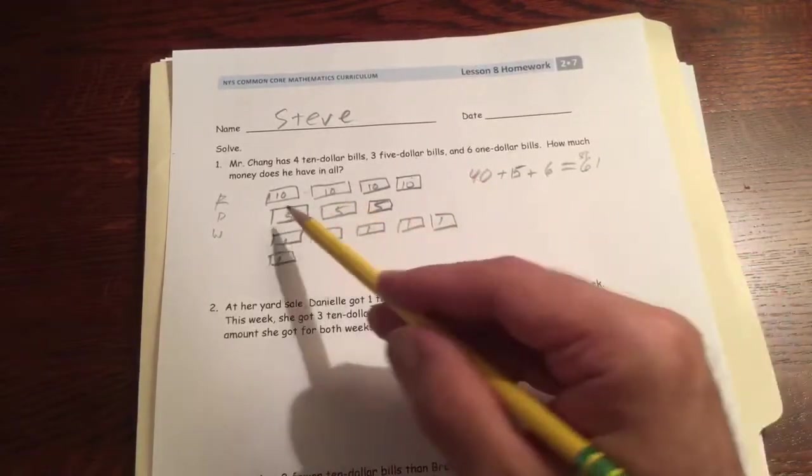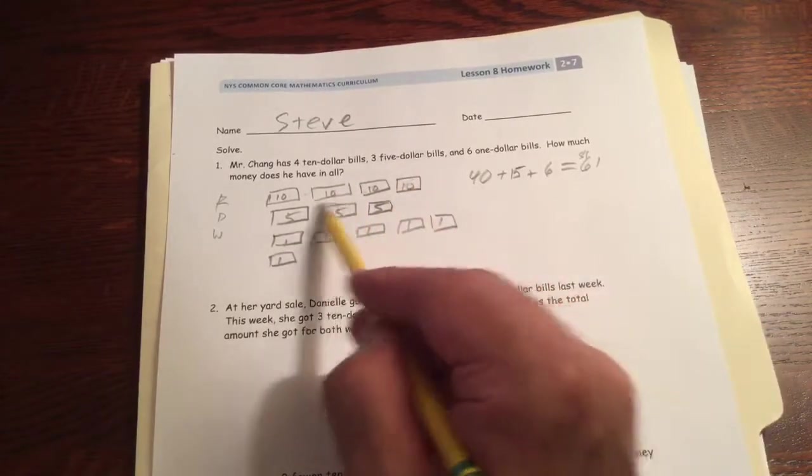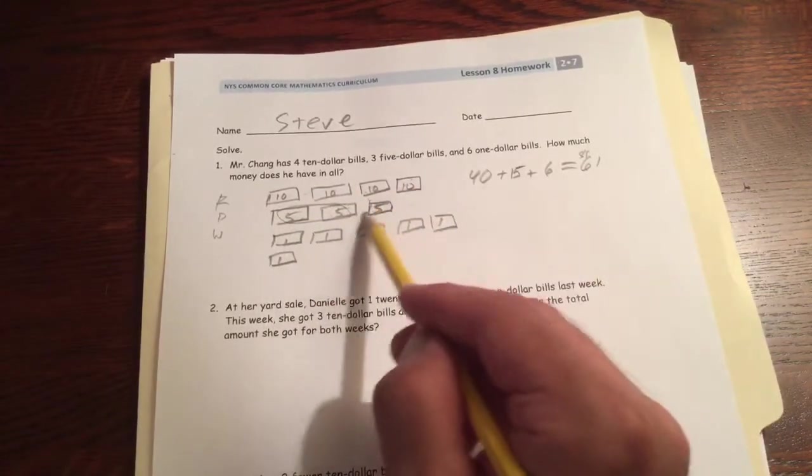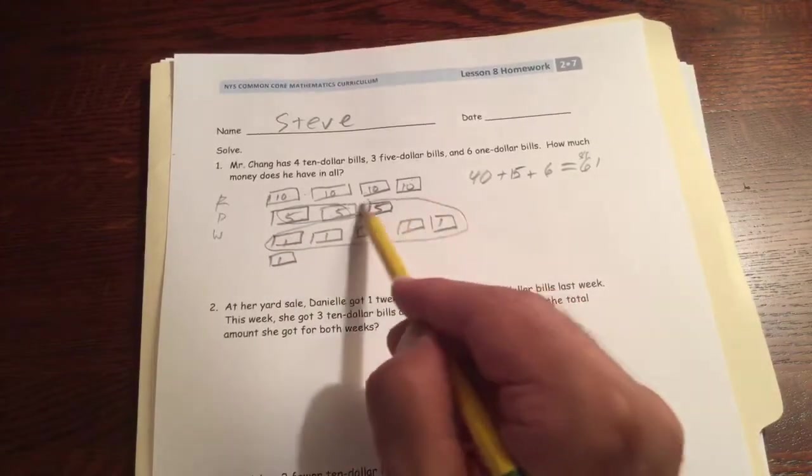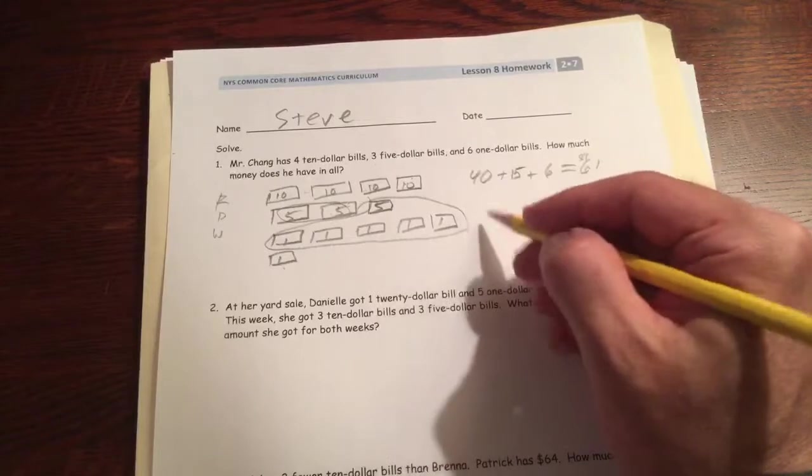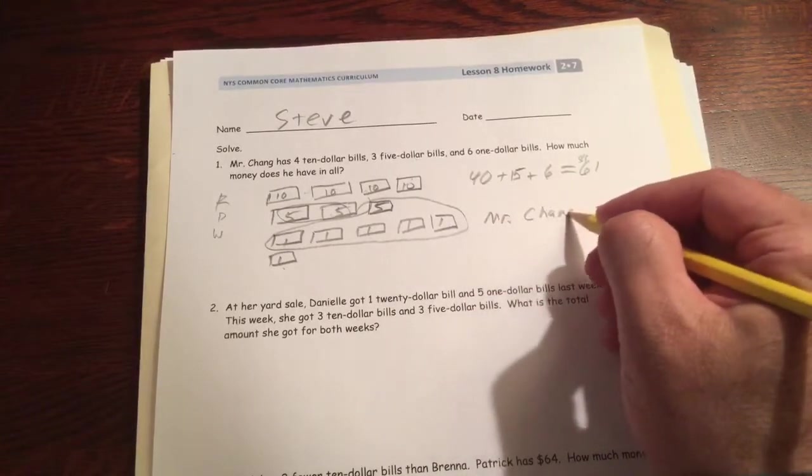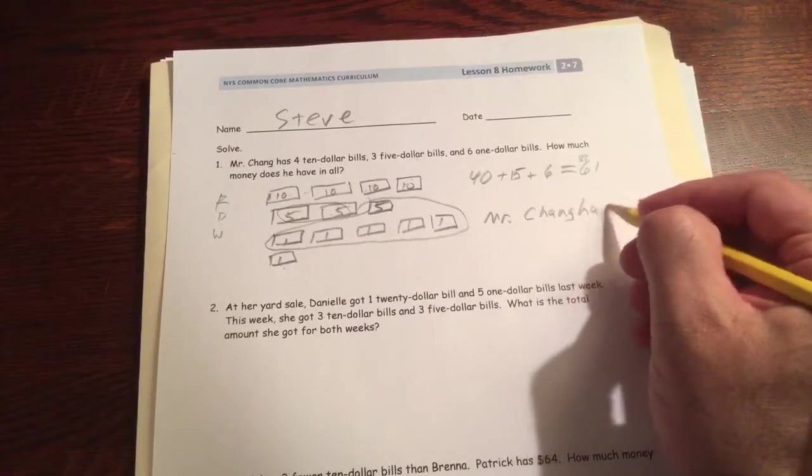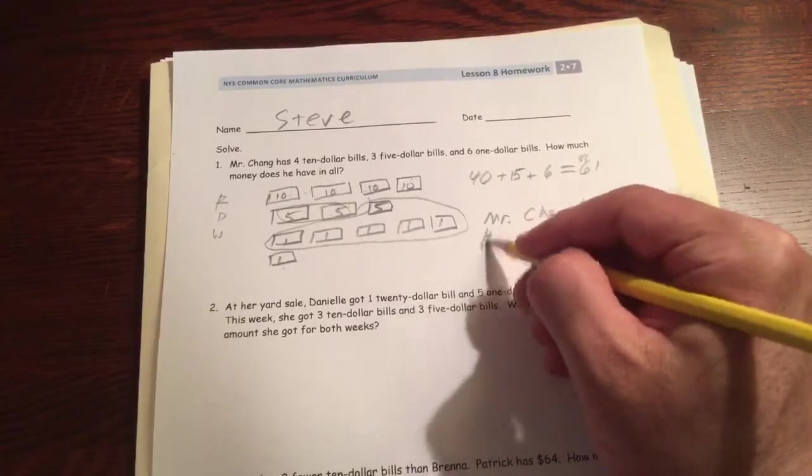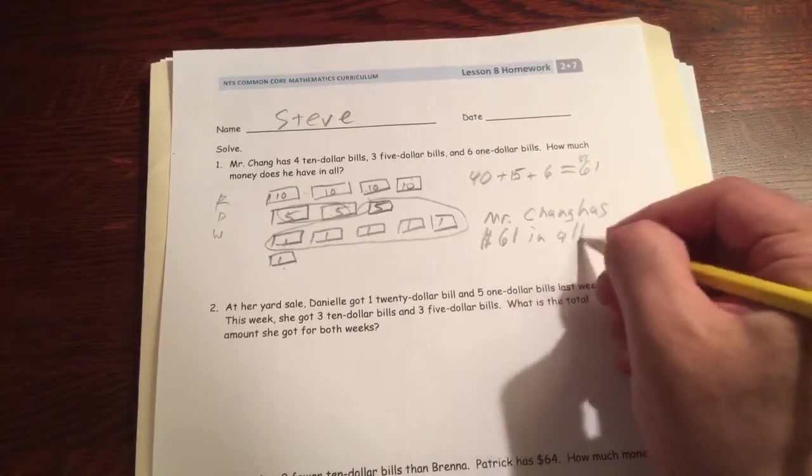You could also just count it. Ten, twenty, thirty, forty, fifty, sixty, 61. Mr. Chang has $61 in all.